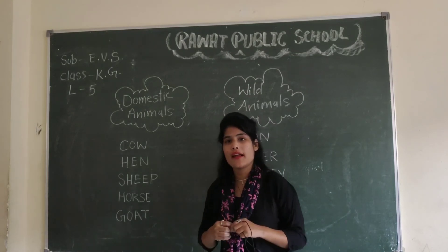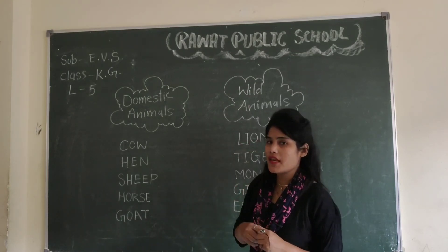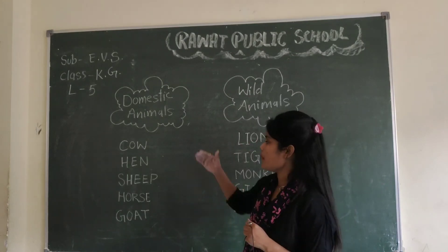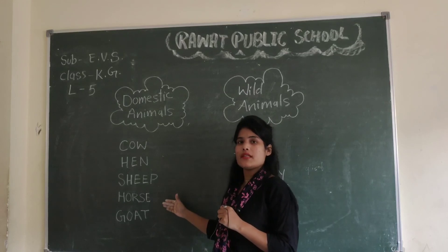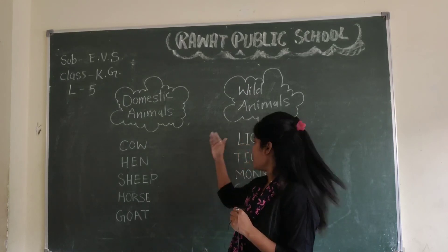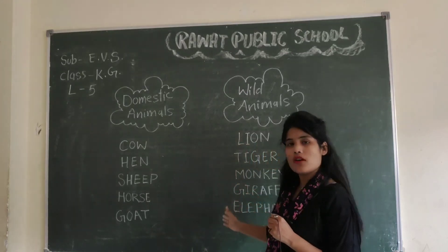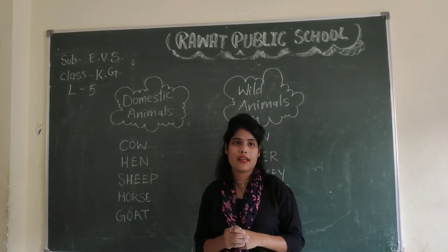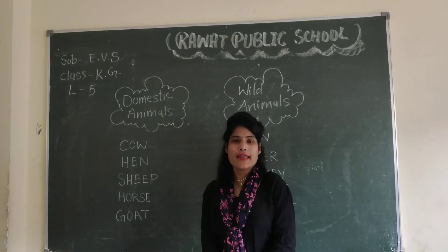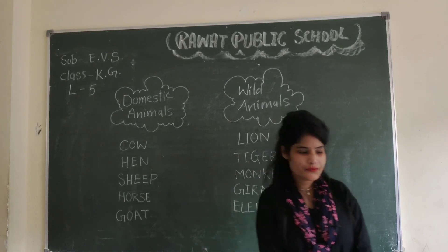Aapko kya karna hai — aapki EVS wali notebook mein five domestic animals ki name likhni hai and five wild animals ki name likhni hai. OK, thank you.